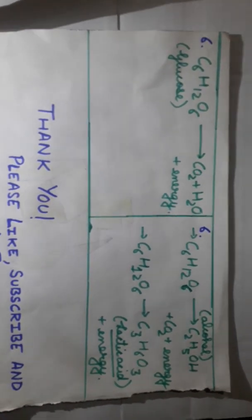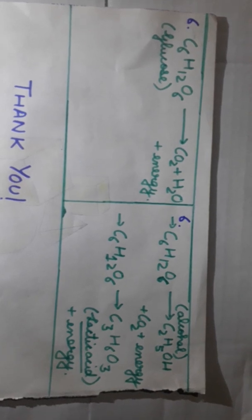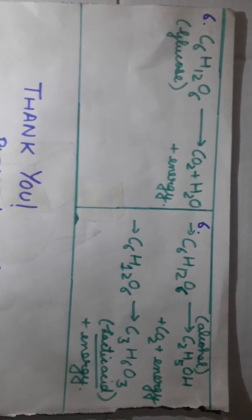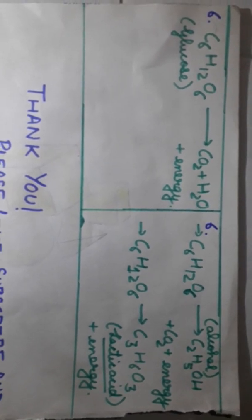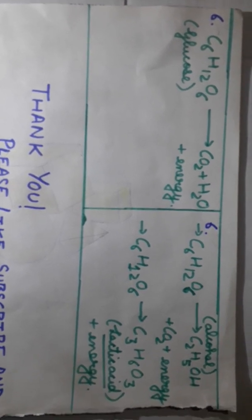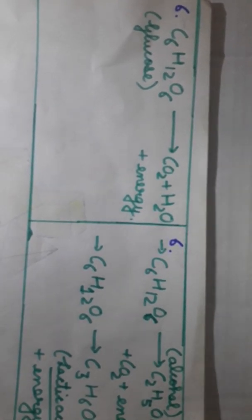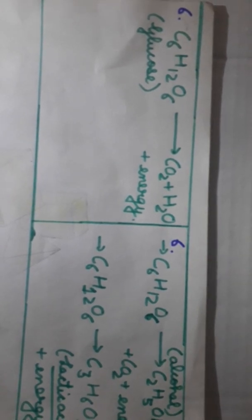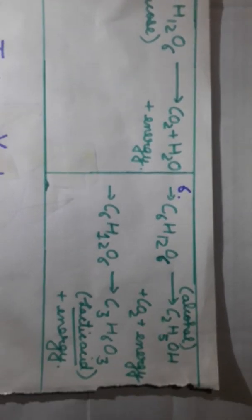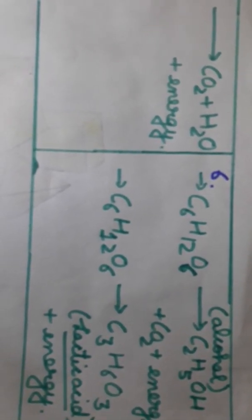The chemical equation for aerobic respiration is: C6H12O6 + O2 → CO2 + H2O + energy. C6H12O6 glucose ka formula hota hai — aur jab oxygen milti hai toh yeh oxidized ho jaata hai carbon dioxide, water, aur energy mein.